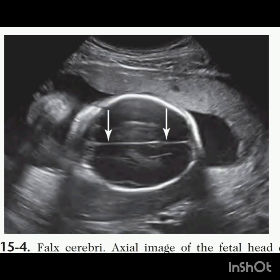This image demonstrates the falx cerebri as a midline linear echogenic structure extending between the cerebral hemispheres, indicated by the two arrows.